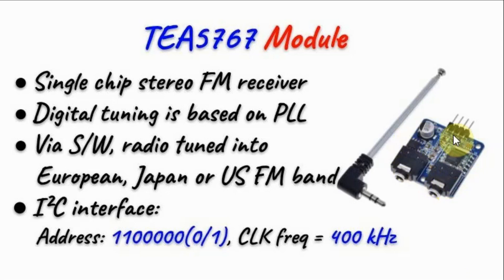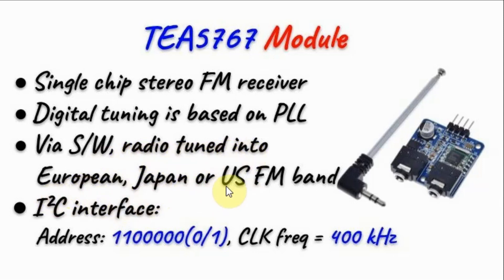The digital FM receiver module uses IC TEA 5767, which is a single-chip stereo FM receiver. Digital tuning within the IC is based on phase-locked loop, and through software the radio can be tuned into European, Japanese, or North American FM bands. It is interfaced to a microcontroller using I2C connection, having a maximum clock frequency of 400 kHz, and a write-read address given here.